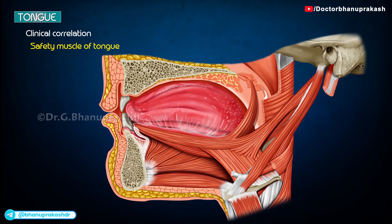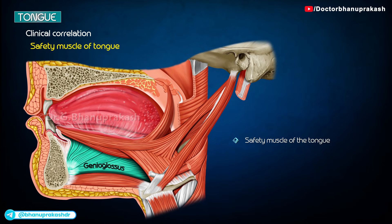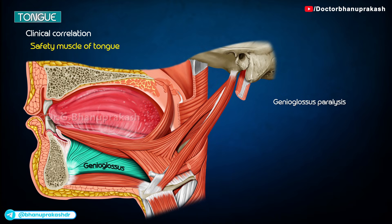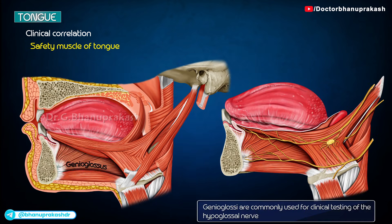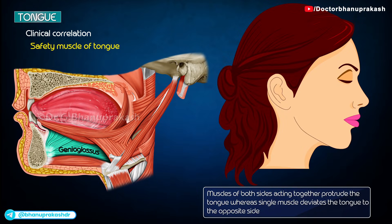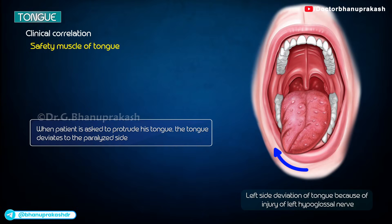Clinical correlation — The genioglossus is called the safety muscle of the tongue because the two genioglossi form the bulk of the tongue and are responsible for its protrusion. If these muscles are paralyzed, the tongue falls back into the oropharynx and obstructs the air passage, causing choking and death. During anesthesia, the tongue is pulled forwards to clear the air passage. The genioglossi are used for clinical testing of the hypoglossal nerve: when a patient protrudes the tongue, it deviates to the paralyzed side or the side of the lesion of the hypoglossal nerve.